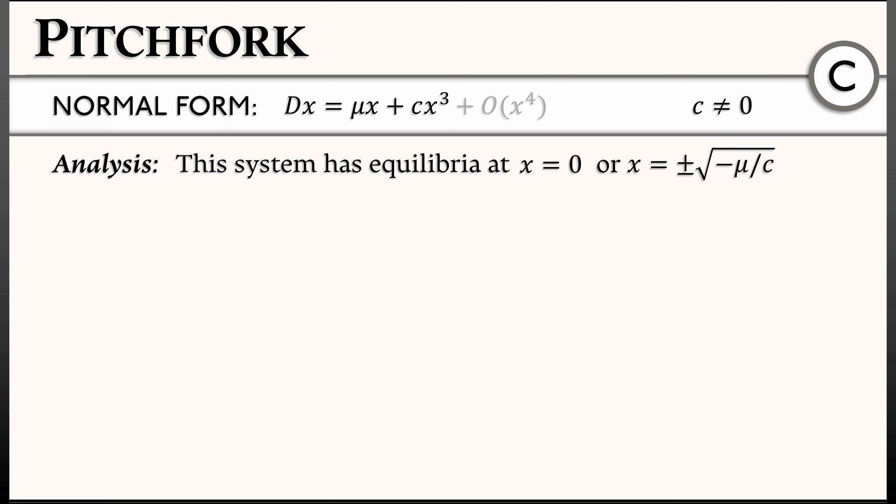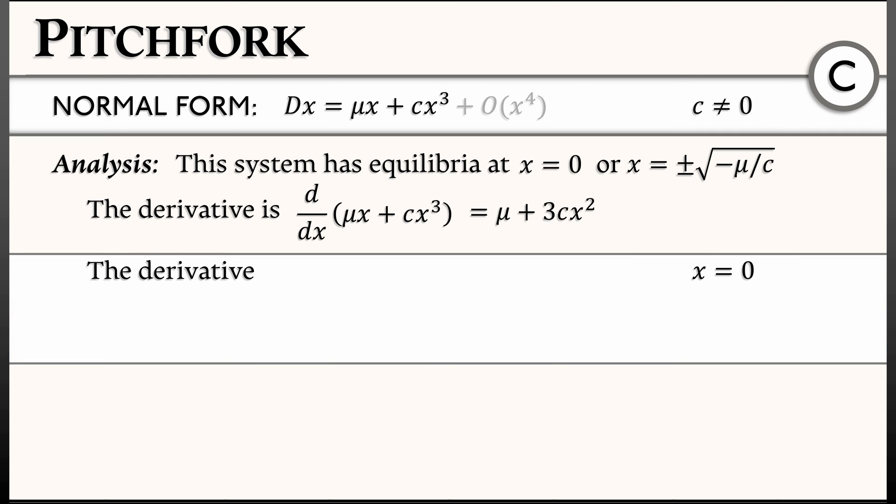To get the stabilities, we take the derivative of the right-hand side. That derivative is mu plus 3c x squared. We have a couple of equilibria to evaluate this at. First off, at x equals zero, the derivative evaluates to mu. That means that when mu is negative, we have a stable equilibrium, and when mu is positive we have an unstable equilibrium.